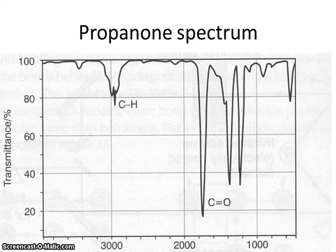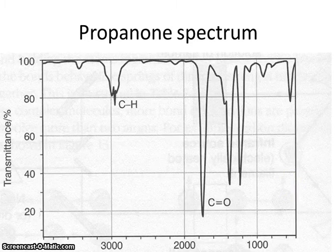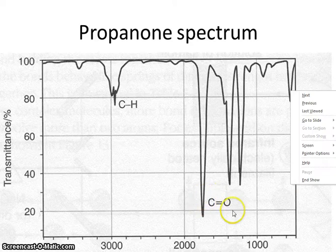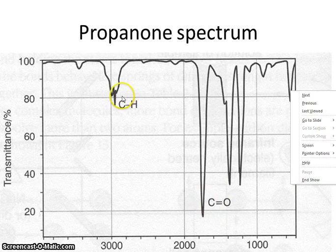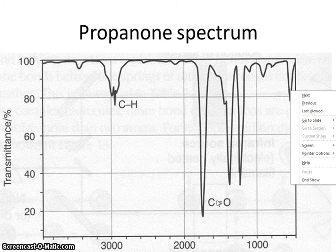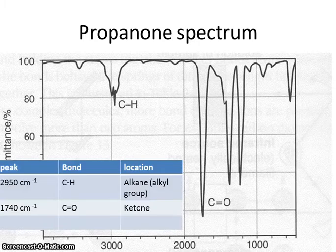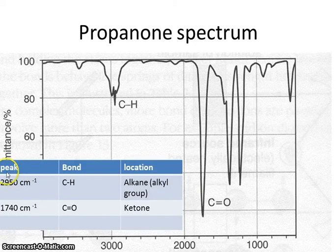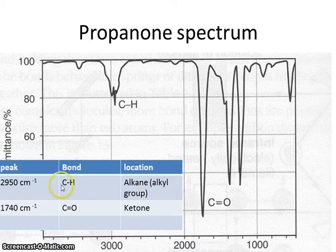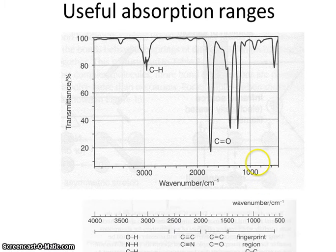So you should now be able to look at a spectrum like this. We're told it's propanone. We've already indicated what the bonds are that give rise to each of these peaks here. Can you draw out a table identifying what information we can deduce about those peaks? Pause the video while you do. So here's what your table should look like. So you give information about the actual wavenumber of the peak. You identify the bond that gives rise to that peak. And you give information about the location. It does illustrate an important point about infrared spectra.